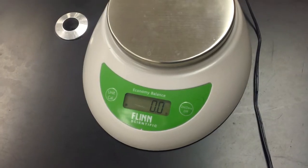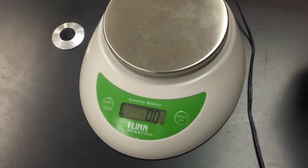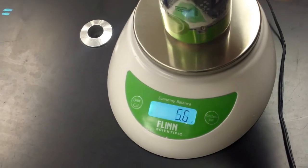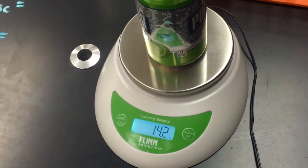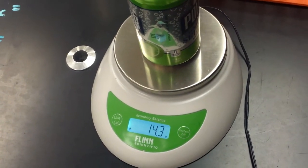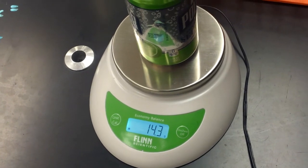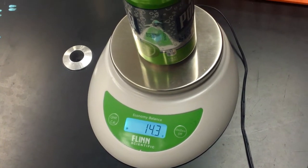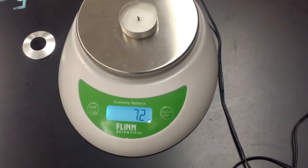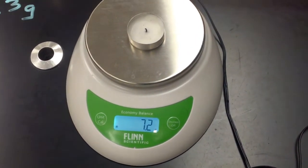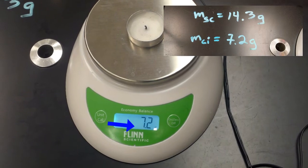I want to make sure the balance is zeroed. It's reading 0.0. We'll put the empty soda can on the balance and we see that it is measuring 14.3 grams. The initial mass for the candle is 7.2 grams.